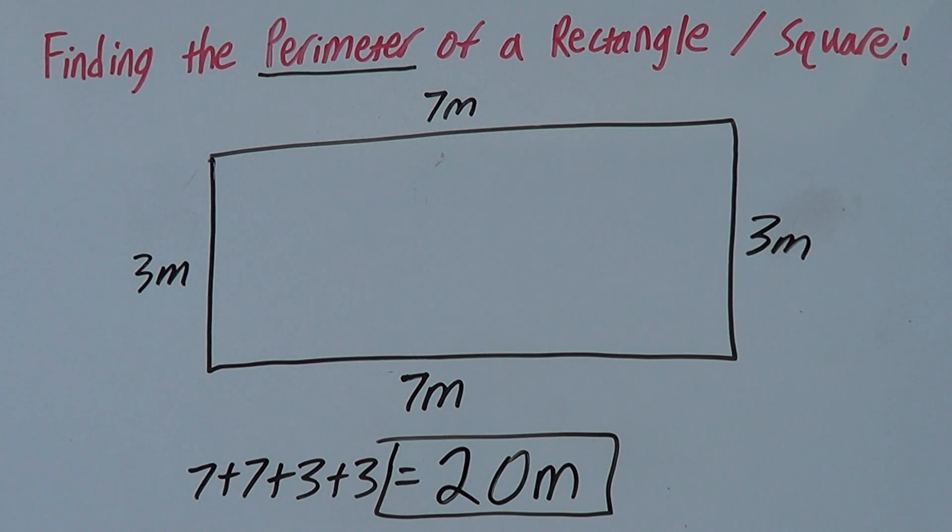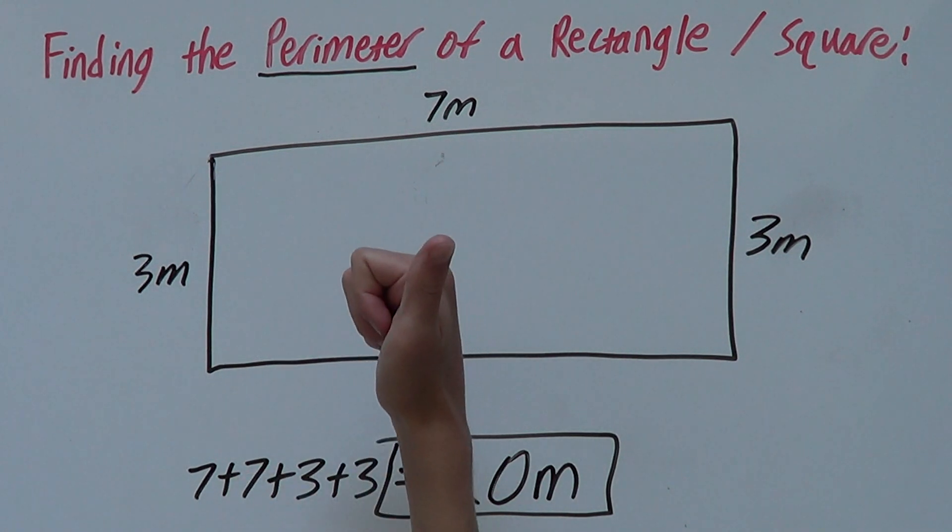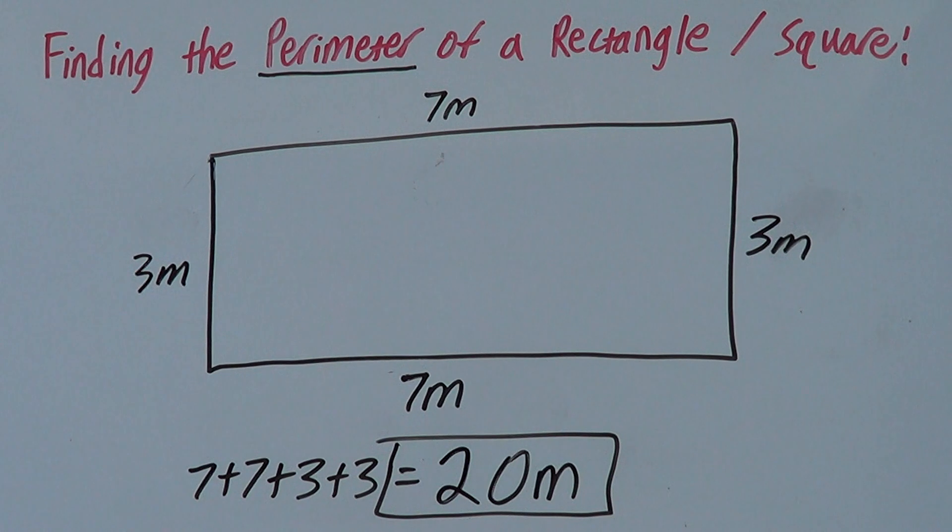And that's how you find the perimeter of a rectangle or a square. I really hope this video was helpful. If it was, please give it a thumbs up and please consider subscribing to my channel. If you have any questions or anything to say, just put them in the comments. And I hope to see you next time.